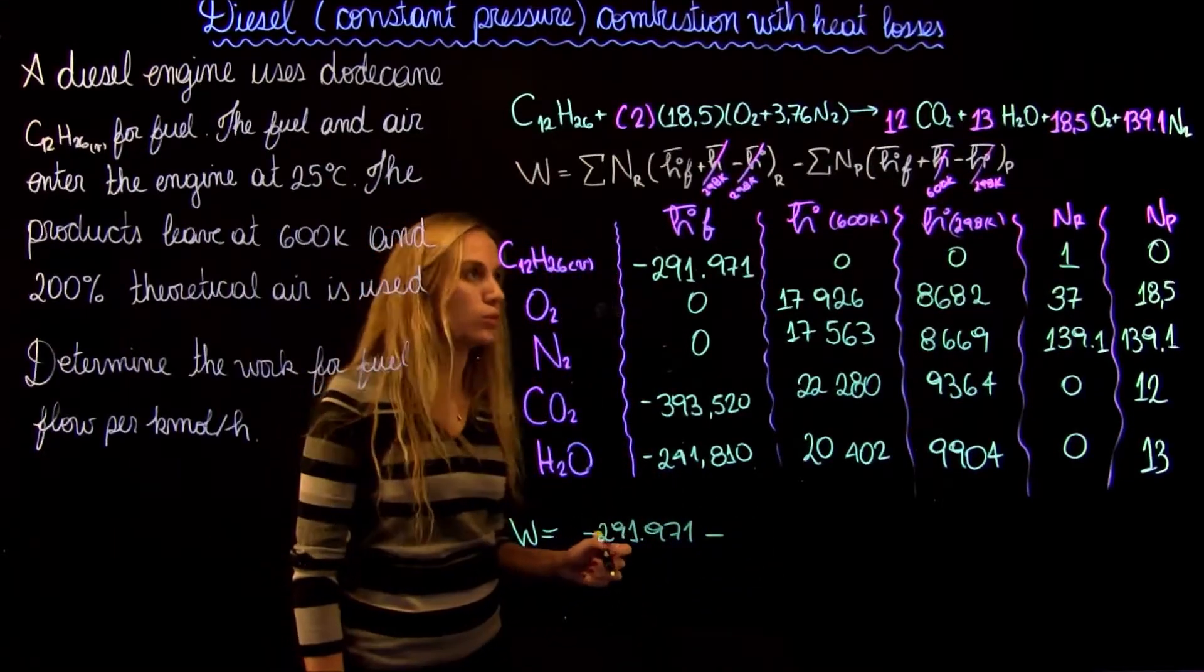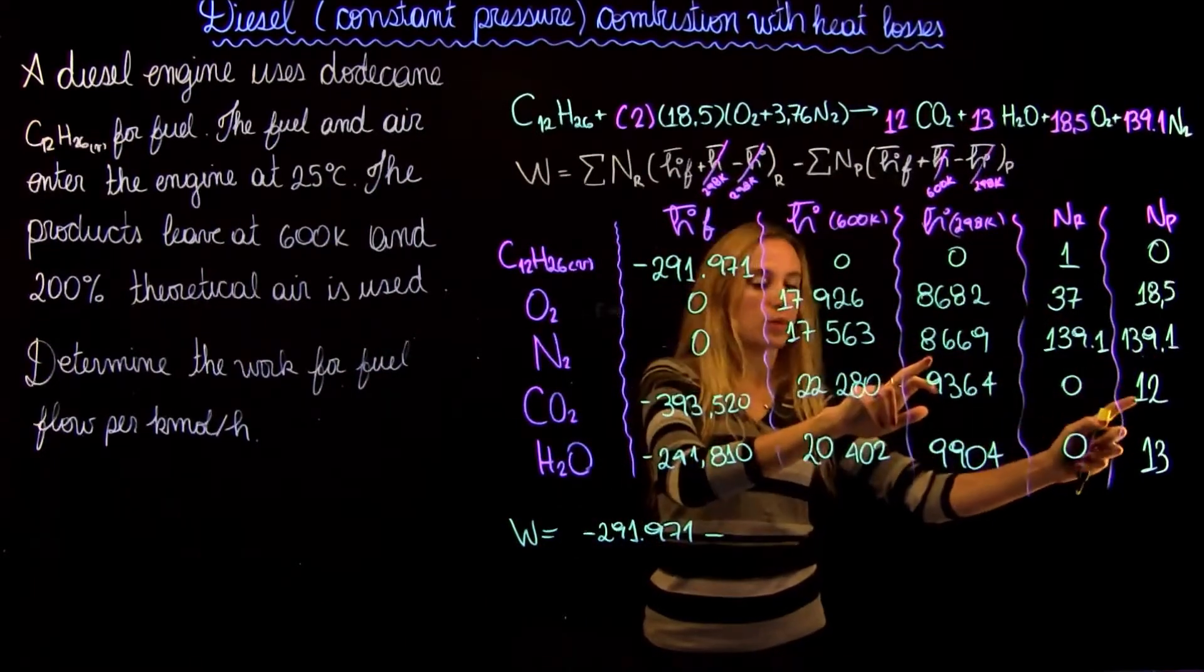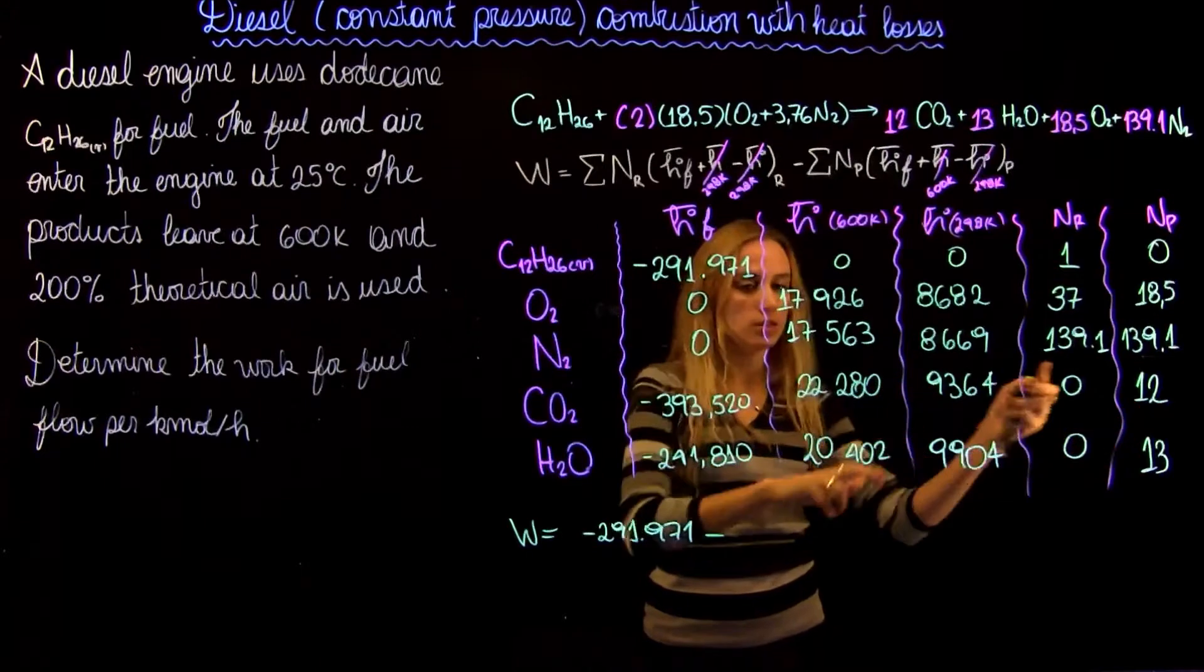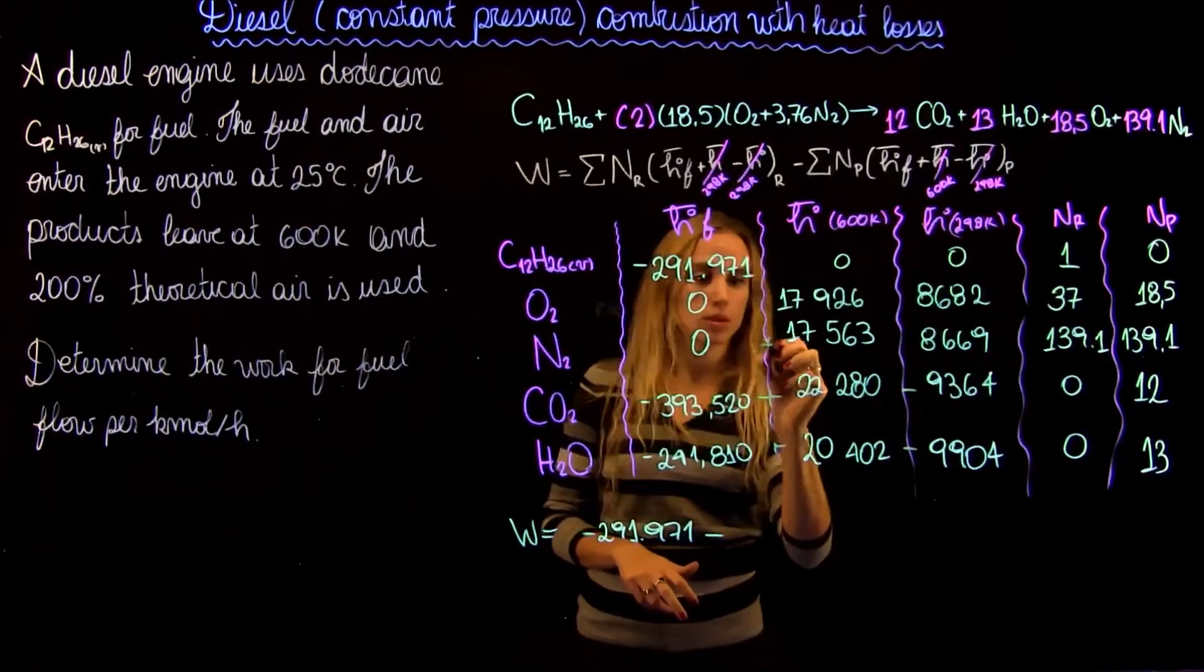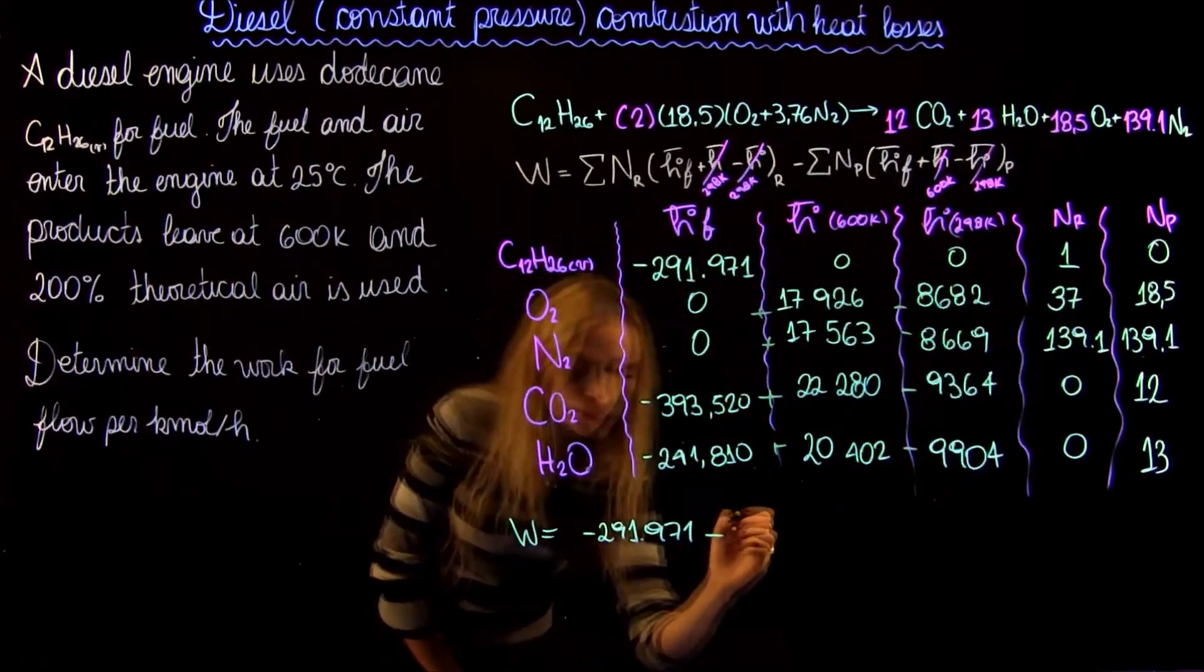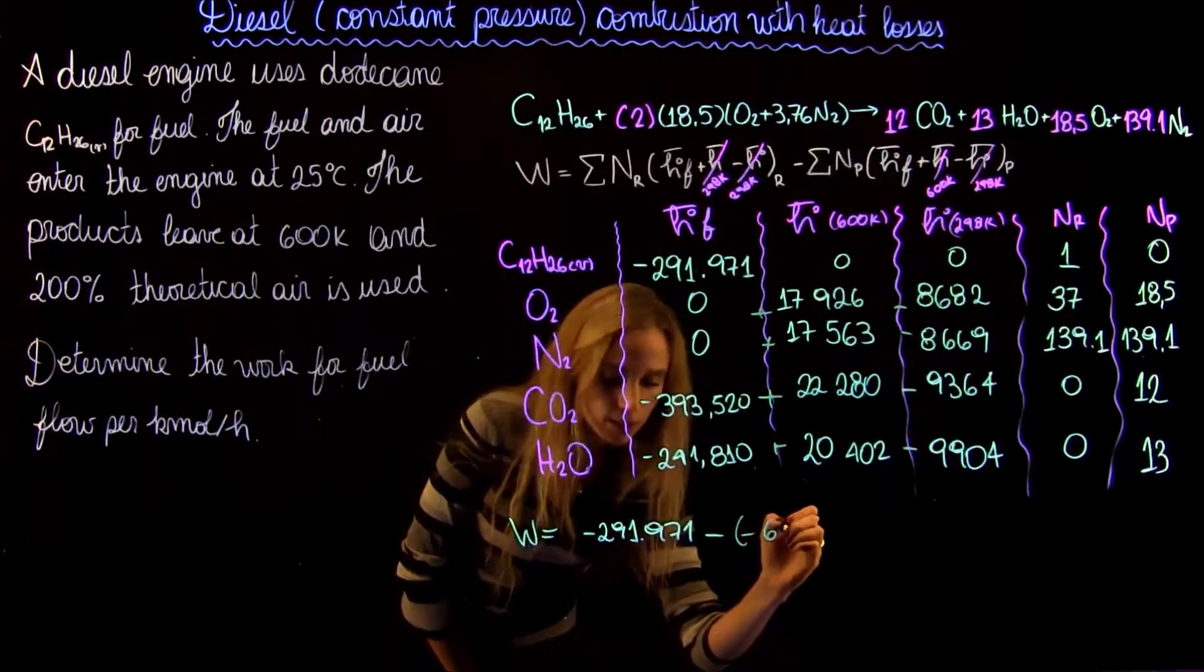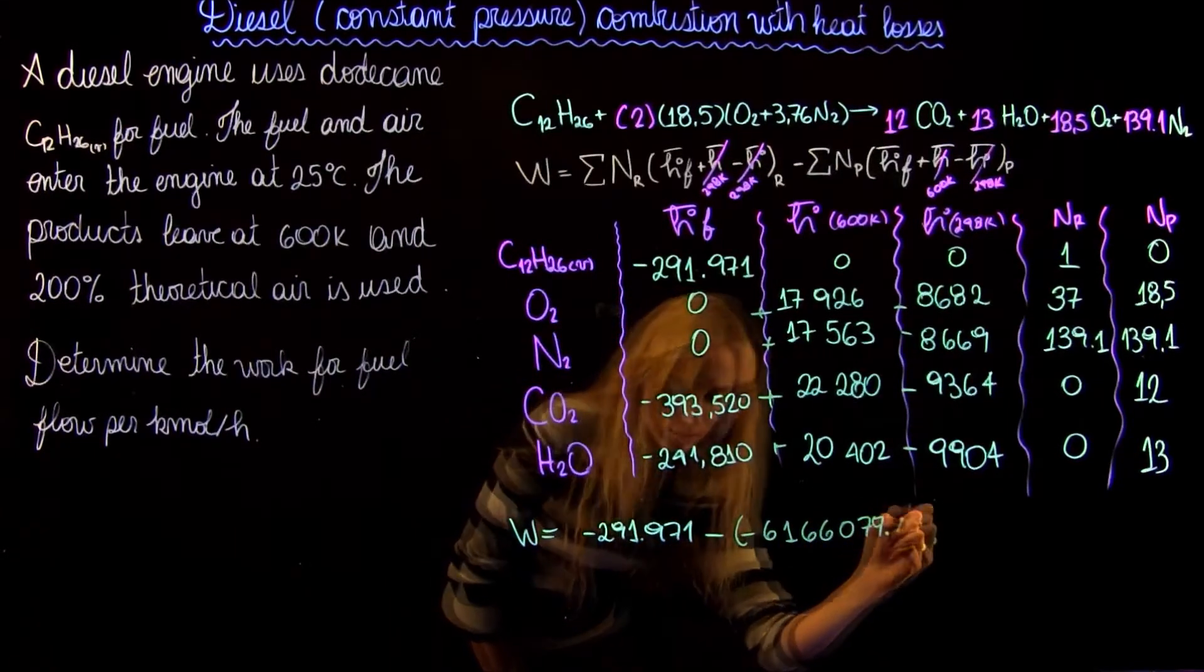And then for the products, what we have to do is we do this number times this minus this for each species times 12 for CO2, times 13 for H2O, and so on. So this is like plus, minus, plus, minus, plus, plus, plus for the products. And then we're going to find it's going to be equal to minus 6166007.1 kJ.